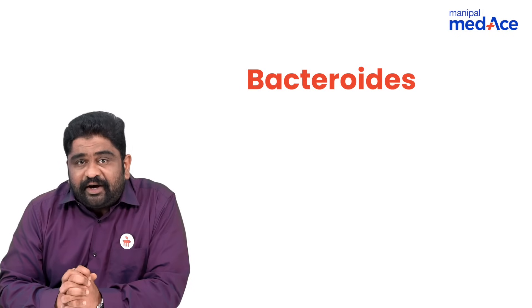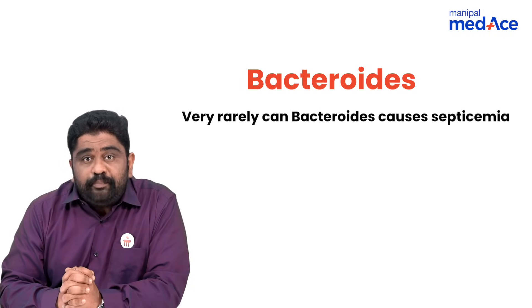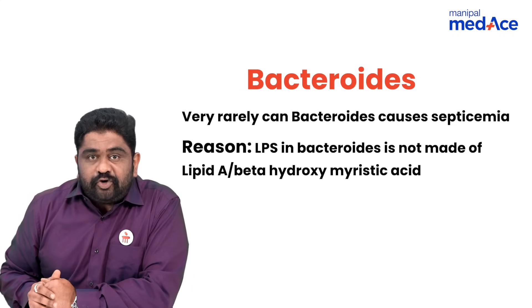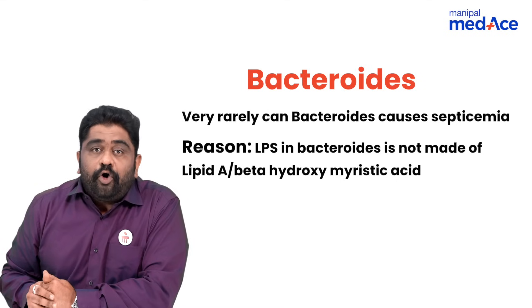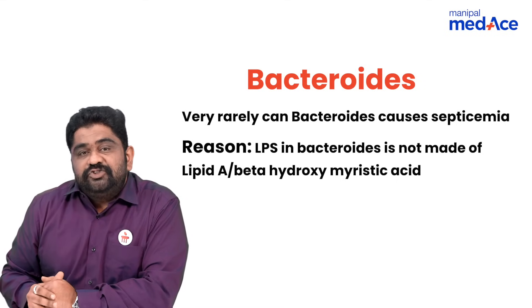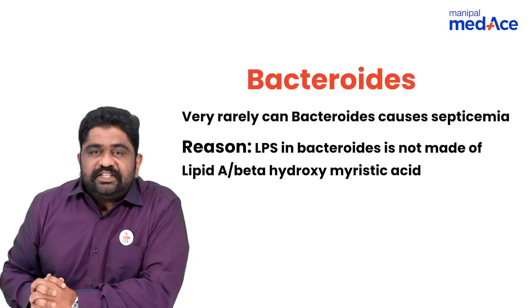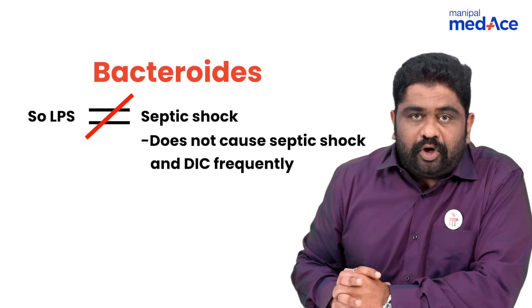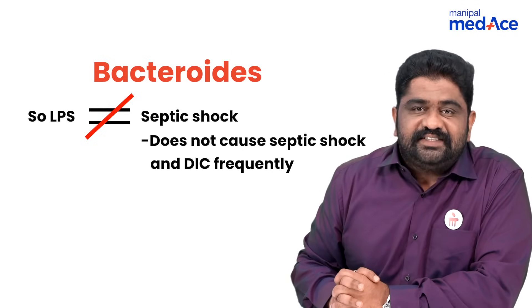But the beauty of Bacteroides is, it is extremely rare that Bacteroides can actually go into bacteremia to cause septicemia. Why? Because the lipopolysaccharide of Bacteroides is slightly different from all remaining gram-negative organisms' lipopolysaccharides — it does not contain Lipid-A, unlike the other bacteria. Because it is not Lipid-A, the LPS of Bacteroides does not amount to endotoxin. So it is very rare for the organism to cause septic shock and DIC.